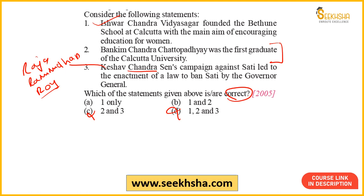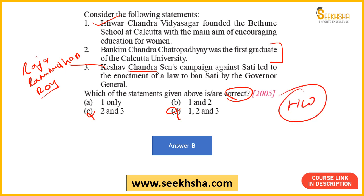The answer is option B — one and two. Both statements are correct. Bankimchandra Chattopadhyay was indeed the first graduate of Calcutta University. As homework, tell me in the comments who was the first woman graduate of Calcutta University. Regarding statement three, it was Raja Ram Mohan Roy whose efforts led to the banning of sati in 1828 under Lord William Bentinck — not Keshav Chandra Sen.